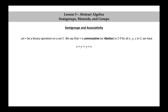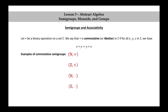Let star be a binary operation on a set S. We say that star is commutative — or sometimes the word abelian is used — in S if for all x, y in S we have x star y equal to y star x. Some examples of commutative semigroups are the natural numbers together with addition, the integers with addition, the natural numbers with multiplication, and the integers with multiplication.